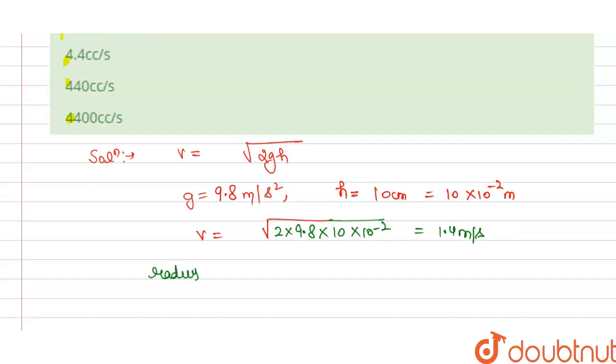So we have the radius of orifice, radius of orifice is equal to 1 centimeter, that is 10 power minus 2 meter.